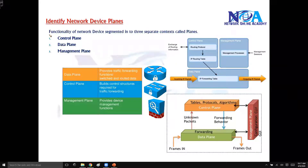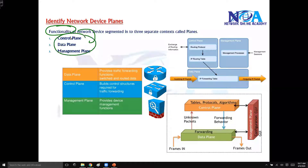The functionalities of devices are divided into different segments, or components, and we call those individual components planes. For example, the router forwards packets at Layer 3.